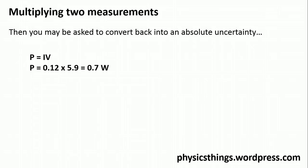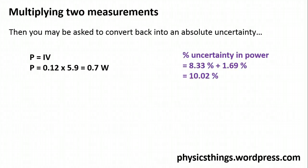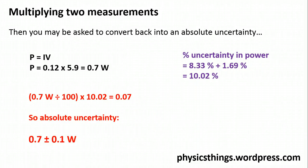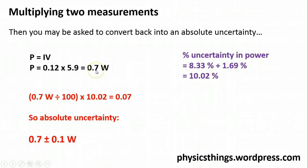You might then be asked to convert that back into an absolute uncertainty. Our power is 0.7 W with an uncertainty of 10.02%. We find what 10.02% of 0.7 is: divide 0.7 by 100 to get 1%, then multiply by the combined percentage uncertainty, giving 0.07 W as our absolute uncertainty. Switching that back into traditional form: note that while the absolute uncertainty was 0.07 W, it rounds up to 0.1 because our reading was only accurate to one decimal place.